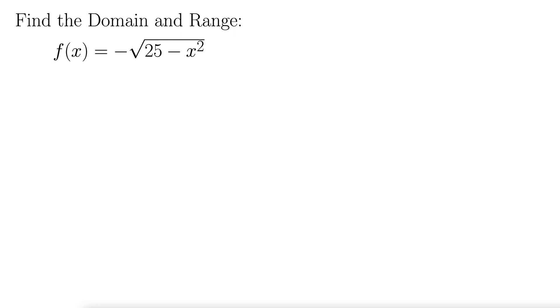This example asks us to find the domain and range of f of x equals negative square root of 25 minus x squared. This example drives students crazy, but instructors love it because it's so elegant. Let's take a look at why that is. Let's start with a quick definition of domain and range. Domain is the x values, range is the y values.